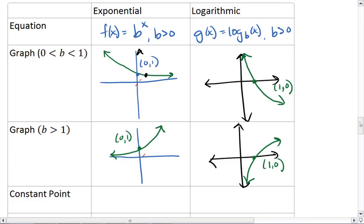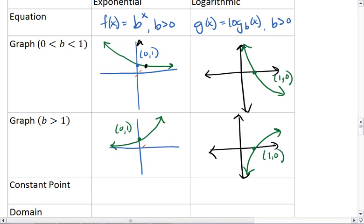Both of these graphs have a constant point that is true no matter what base we have. For exponentials, we know that any base raised to the 0 power will be 1. For logarithms, any base, if it's log base b of 1, will be 0.